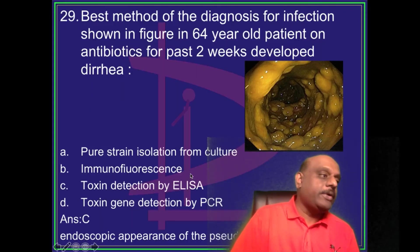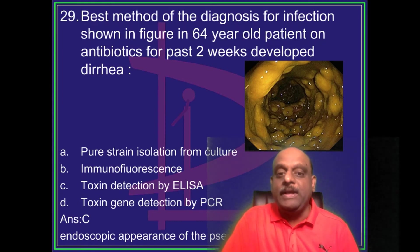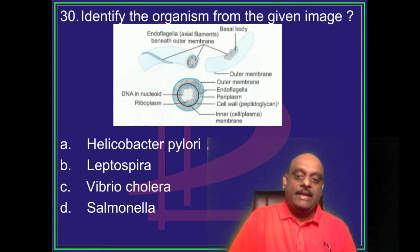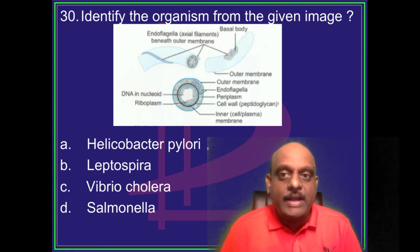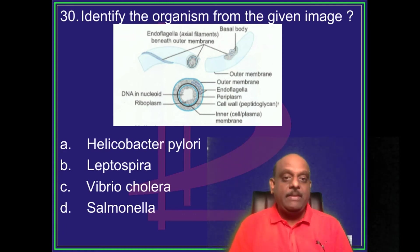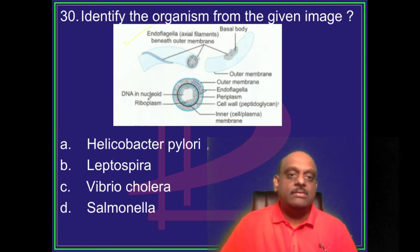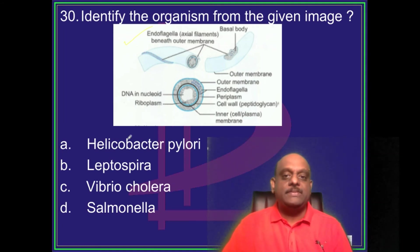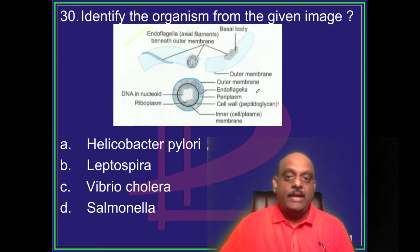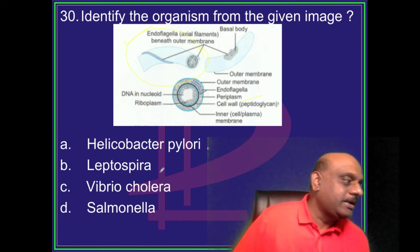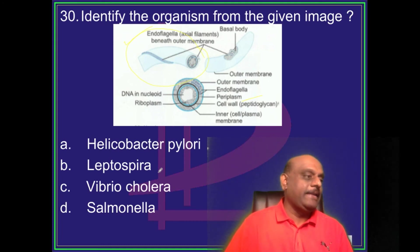The endoscopic appearance shown is pseudomembranous colitis — remember this classic endoscopic picture. Now identify this organism from the given image: there is an endoflagella, DNA in the nucleoid, and a periplasmic appearance. What organism do you think this is?